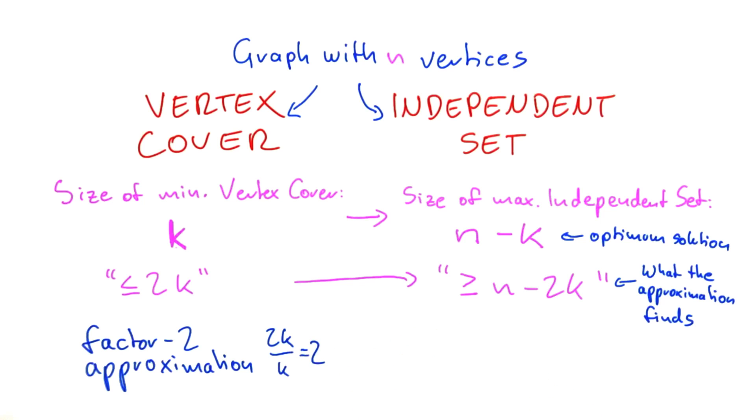Now what about independent set? Independent set is a maximization problem. For vertex cover, we took what the algorithm finds and divided it by the size of the optimum solution, but that was because it's a minimization problem. For a maximization problem, given how we define approximation factors, we have to do it the other way around.